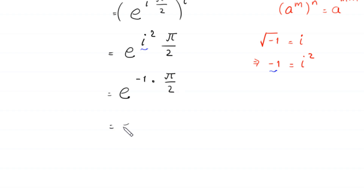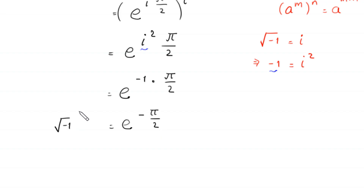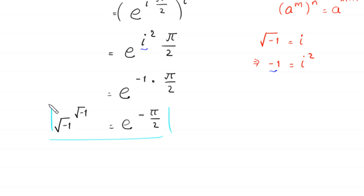So e to the power negative 1 times pi over 2 becomes e to the power negative pi over 2. The given expression root negative 1 to the power root negative 1 is equal to e to the power negative pi over 2. This is the final answer. Thank you.